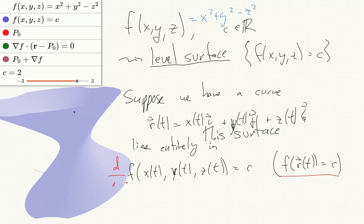So now what we'll do is differentiate both sides with respect to t, while the derivative of a constant is zero. But then the left-hand side, by the chain rule, we'll get del f by del x times dx by dt, plus del f by del y times dy by dt, plus del f by del z times dz by dt.